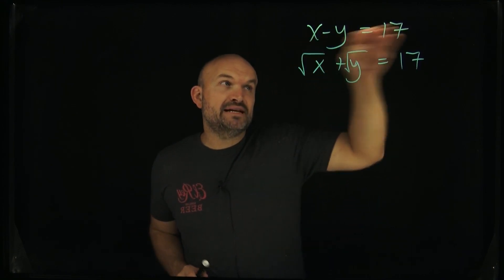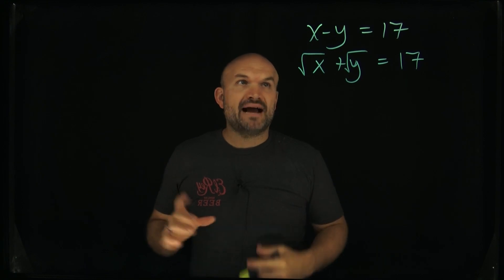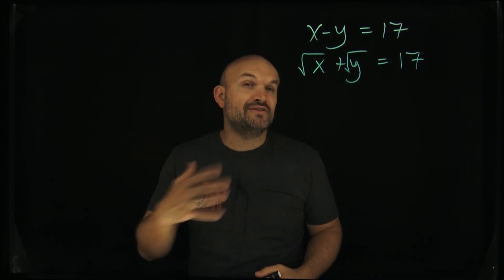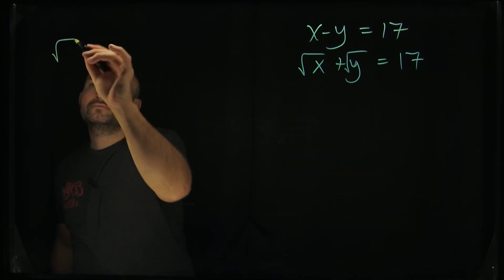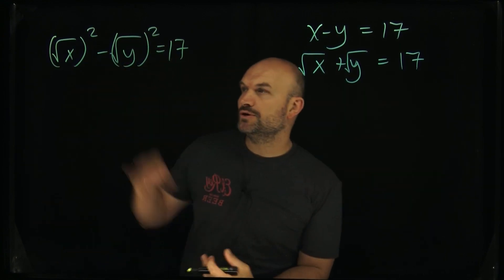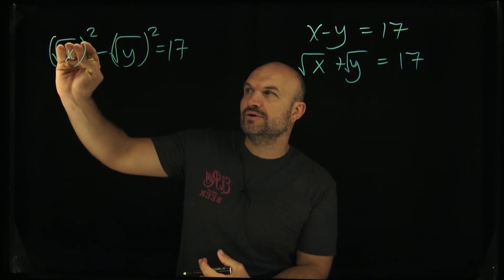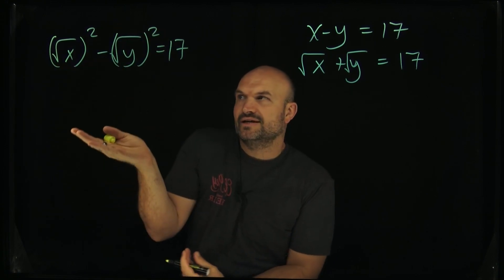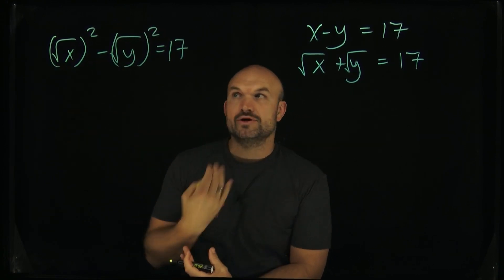So what I'm going to do is I'm actually going to manipulate this first equation by taking the square root of each variable squared. I just took the square root of something squared, and those are inverse operations so that's okay.